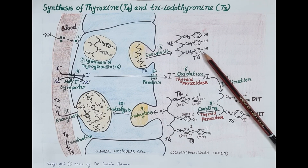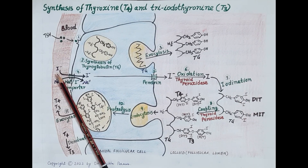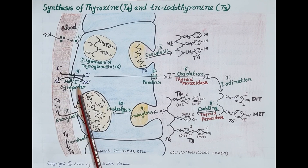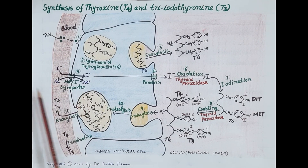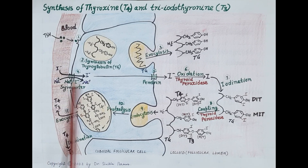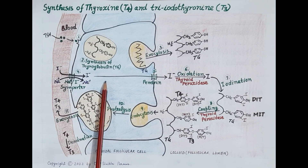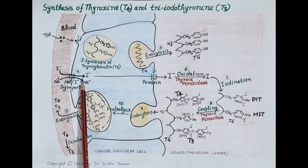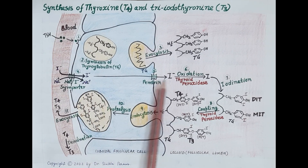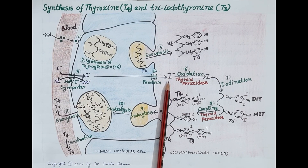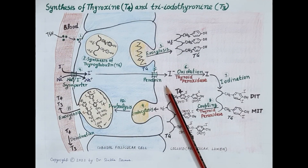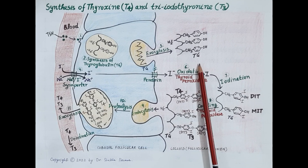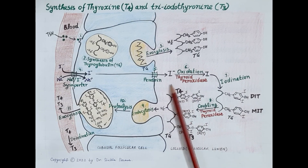Iodine is essential for the synthesis of T3 and T4. The sodium-iodide symporter (NIS) actively transports iodide ions from the blood into the follicular cells. From the follicular cells, these iodide ions are further transported into the lumen by a transporter called pendrin. By the end of step 5, both thyroglobulin and iodide ions are present in the follicular lumen.